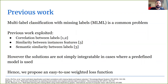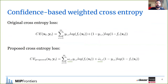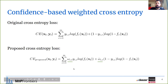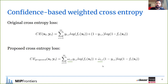Hence, we proposed an easy-to-use weighted loss function. Our weighted loss function is based on the original cross-entropy loss. In the original cross-entropy loss we have two terms — one accounts for the negative label and one for the positive label — and what we propose is to add two weights, one for the positive case and one for the negative case, that account for our confidence that this is a true label or not.